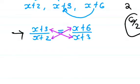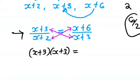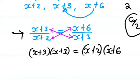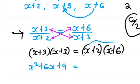So what we're going to do is multiply x plus 3 times x plus 3, and x plus 2 times x plus 6. Expanding this, we get x squared plus 6x plus 9 equals x squared plus 8x plus 12.